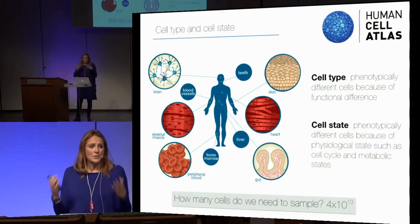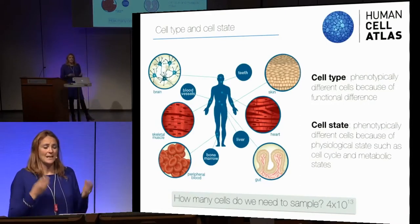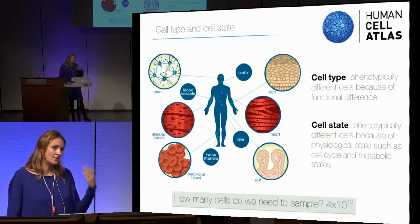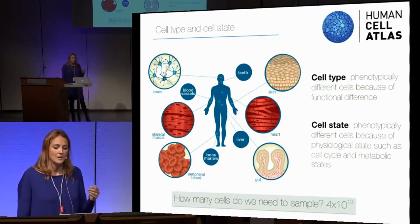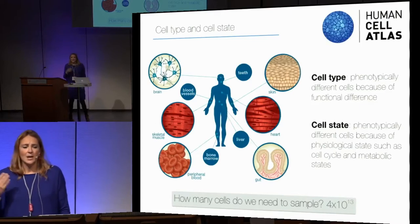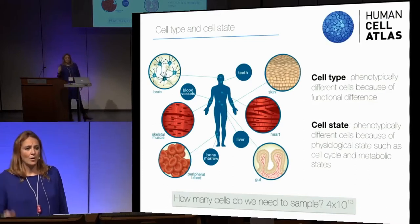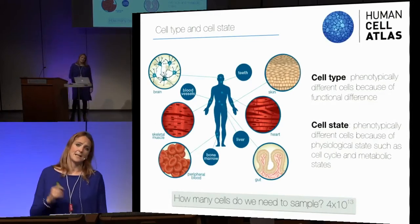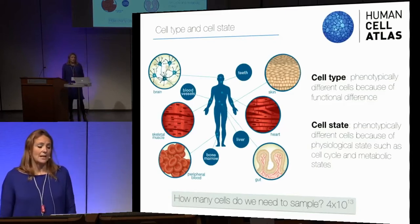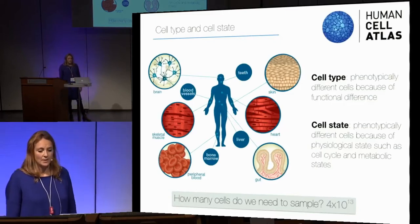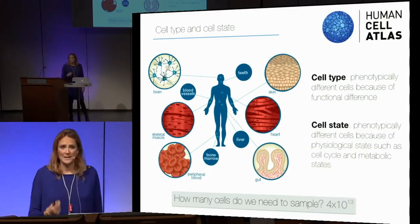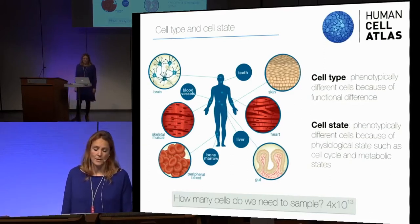But in between these very phenotypically different cells — which also have different function and secrete different hormones — we have very big heterogeneity. This heterogeneity arises from different cellular states that can be cell cycle, as we heard today, which is a very big part of it, but also metabolic state, which I think is very important.